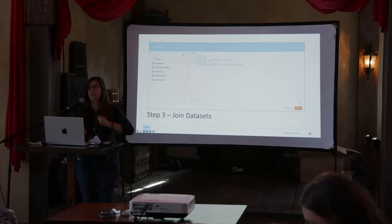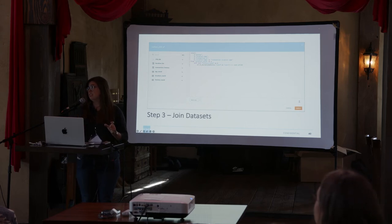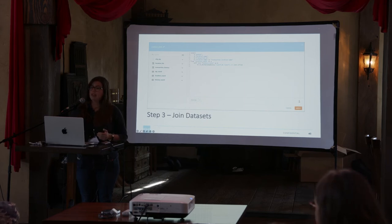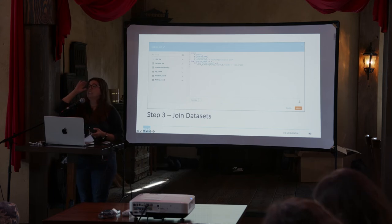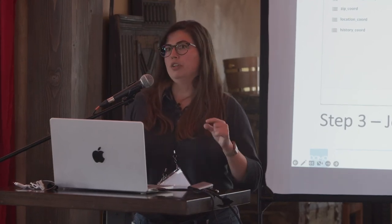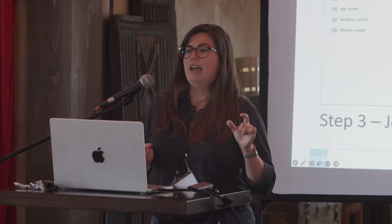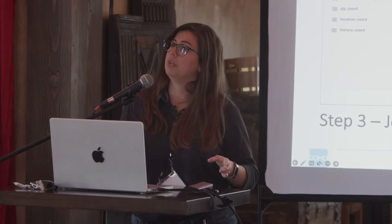After that, you join those two transforms together using the Distance Sphere function. The Distance Sphere function relies on those two points we made in the previous steps and returns the distance in meters between them based on latitude and longitude. If you wanted to match all locations within 100 miles of each other, you simply convert those meters to miles and multiply by 100. Joining by those two gives us every single transaction that fell within 100 miles of each of the locations we're searching against.